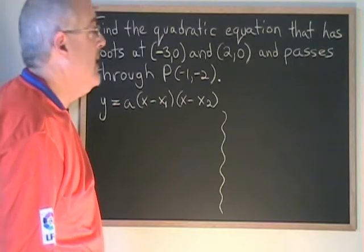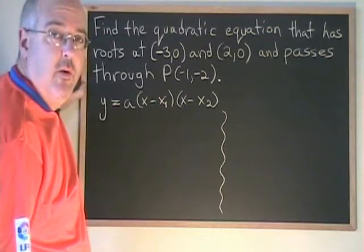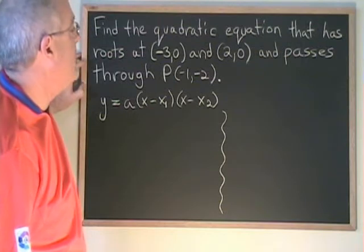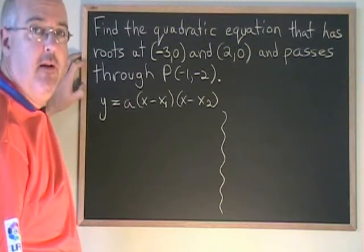In this example, we are asked to find the quadratic equation that has roots at negative 3 and 2 and passes through the point (-1, -2).